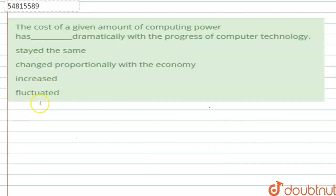Hello students, let us have a look at the question first of all. The cost of given amount of computing power has dramatically changed with the progress of computer technology. So we are asking, what kind of change has occurred in the cost of computing power? As we have progressed with computer technology, we need to understand the cost of computing power over the course of time.